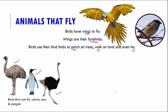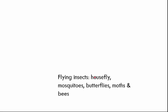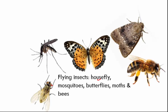Insects can also fly. Flying insects include the housefly, mosquito, butterfly, moth, and honeybee. All of these insects can fly because they have wings capable of carrying their very light bodies through air.